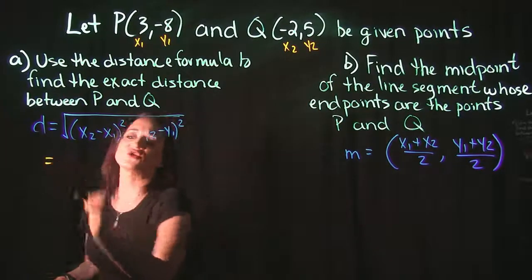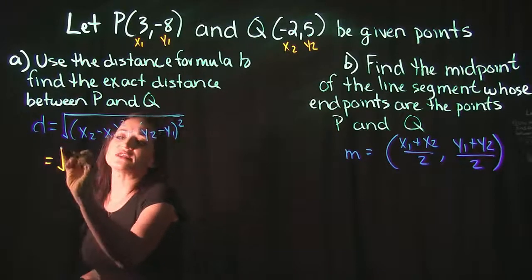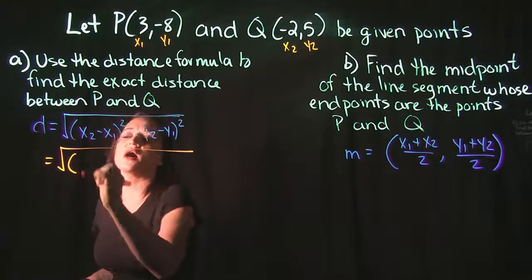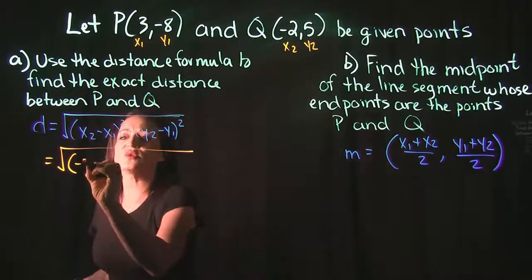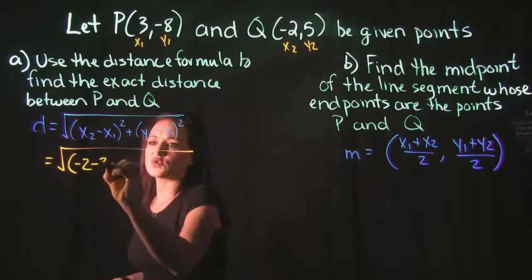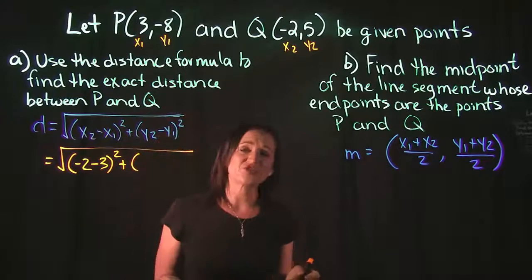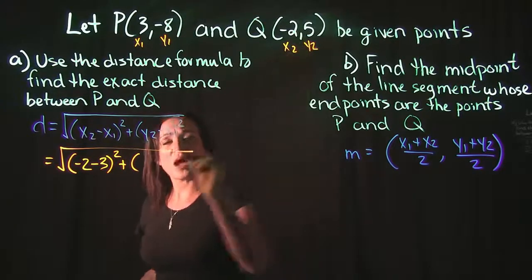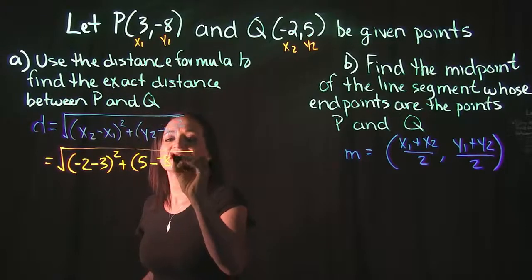So the distance formula says the square root of x2 minus x1. x2 is -2, minus is part of the formula, x1 is 3, and we're going to square that, plus y2 minus y1. y2 is 5, minus y1 is -8, and then we're going to square that.